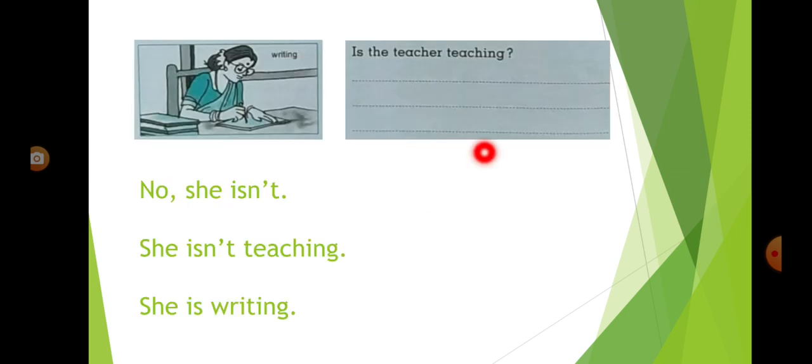Now the next one. Can you see the picture here? Is the teacher teaching? What can you see? Can you see the teacher teaching? No. What is the teacher doing? She is writing. So no, she isn't. She isn't teaching. She is writing.